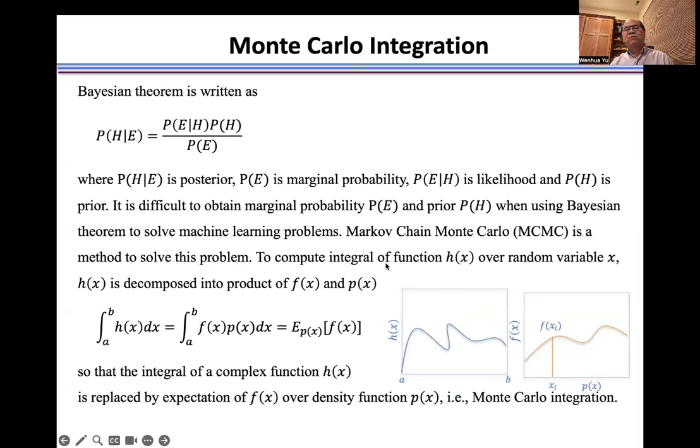To compute the integral of a function h(x) over random variable x, h(x) is decomposed into product of f(x) and p(x). Then, using the definition of expectation, we express this integral as the expectation of function f(x) over density function p(x), which is called Monte Carlo integration.